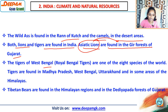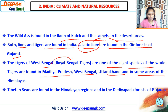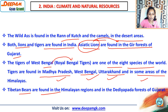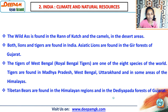The tigers of West Bengal are called Royal Bengal Tigers, and they are one of 8 species of tigers in the world. Tigers are found in Madhya Pradesh, West Bengal, Uttarakhand, and some areas of the Himalayas. Tibetan bison are found in the Himalayan region and the Dediapada forest of Gujarat, near the river Narmada.